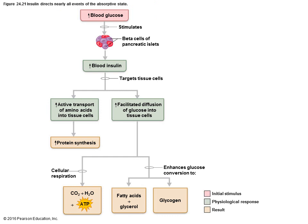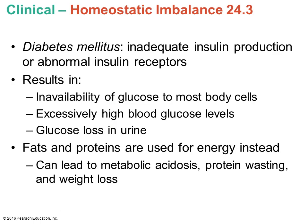The beta cells of the pancreas secrete insulin, and the amount secreted is relative to elevated blood glucose levels. As blood glucose rises, it stimulates the beta cells to secrete more insulin, which helps with the breakdown and cellular uptake of glucose to bring levels back down. If there is inadequate insulin production or abnormal insulin receptors, glucose cannot get into the cells, excess glucose is lost in the urine, and blood glucose levels are extremely high. The cells then use fats and proteins instead, leading to protein wasting, metabolic acidosis, and weight loss.